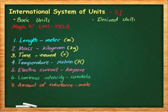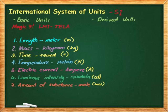For electric current, the unit is ampere — since it comes from a person's name, it uses a capital letter A. For luminous intensity, the unit is candela, abbreviated as cd. And for amount of substance, the unit is mole, abbreviated as mol — without the final e. These are the seven basic or fundamental units in SI.